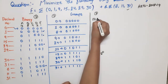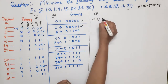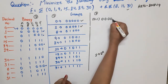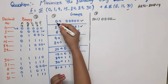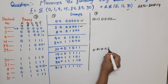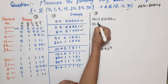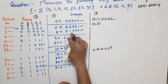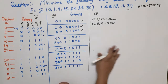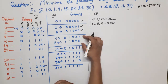Starting comparisons: minterms 0 and 1 — difference is 1, which is 2^0, so pairing is possible. Result: 0,1 with last bit changed → 0000-. Both 0 and 1 are marked used. Next, minterms 0 and 8 — difference is 8, which is 2^3, so pairing is possible. Result: 0,8 with second bit changed → 0-000.